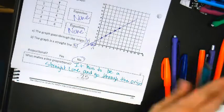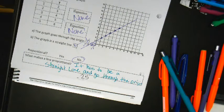What makes a line proportional? It has to be a straight line and go through the origin. Good thing I recorded myself so you can catch up this weekend on this most amazing YouTube video.